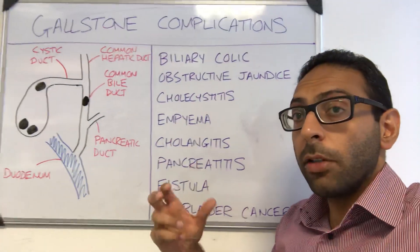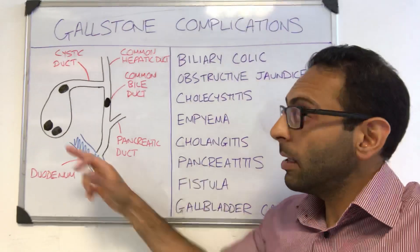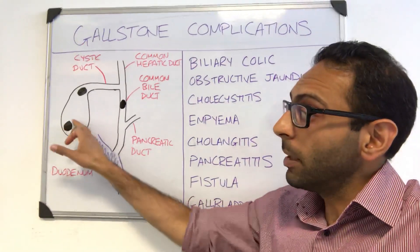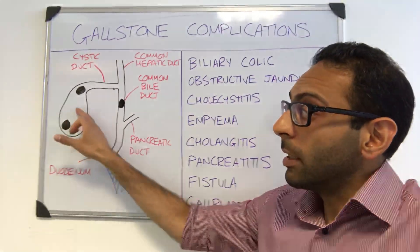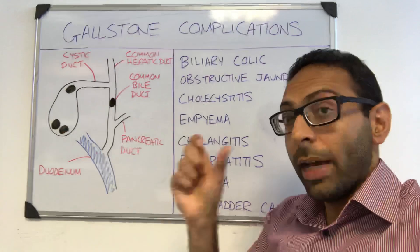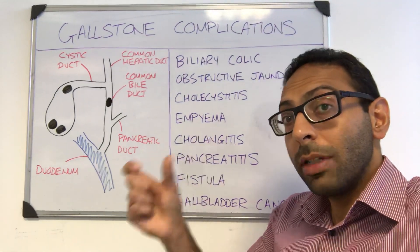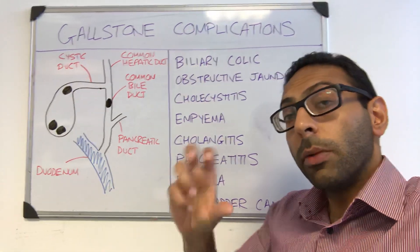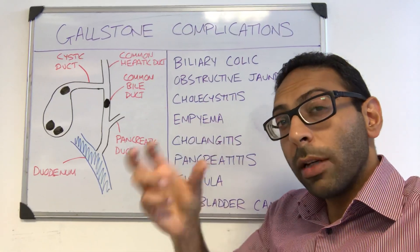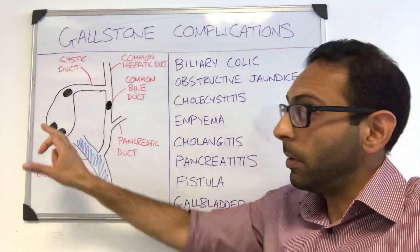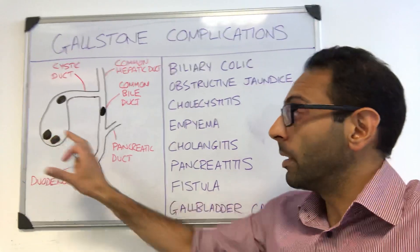Empyema is a step further — you get pus that builds up in the gallbladder, and that's your empyema. This is a bit different to a gallbladder mucocele, which is when you get non-inflammatory fluid filling the gallbladder.